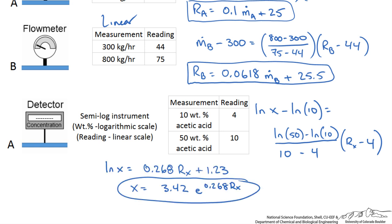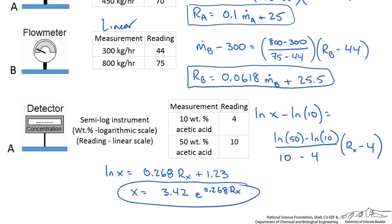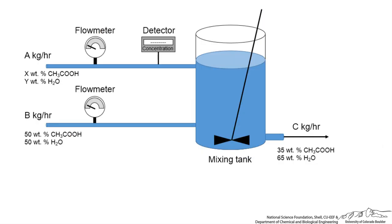Now we have a relationship between our meter readings and the measurement that it is taking. How can we use this information to help an operator control the flow rate of stream B, given information about the incoming stream A?